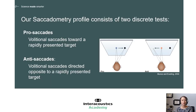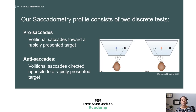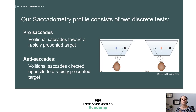Saccadometry actually consists of two subtests. The first one is called pro-saccades, and the second one is called anti-saccade. In the pro-saccade test, the patient starts looking at the center dot, and a dot pops up either to the right or to the left. Their job is to move their eyes towards the dot, which most patients do quite well at. You'll see in our graphical example that a correct pro-saccade movement has the patient starting with their eyes on the center dot, the dot moves to the right, and the patient also moves their eyes to the right.